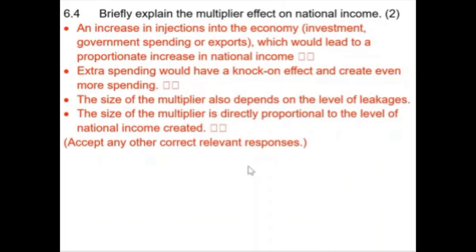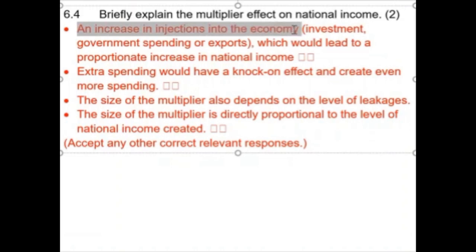Question 6.4: briefly explain the multiplier effect on national income. How will a larger spending propensity lead to a larger national income? The more we spend, the larger the national income, and the larger the multiplier. The answer: an increase in injections into the economy — investment, government spending, exports — leads to a proportional increase in national income. It's two marks and very straightforward.